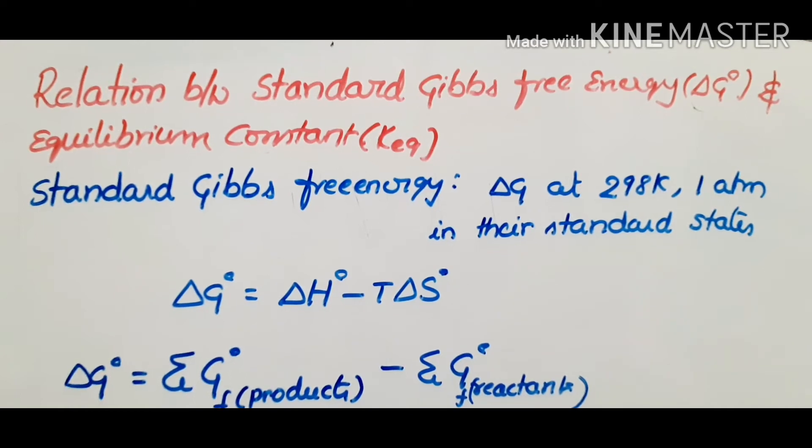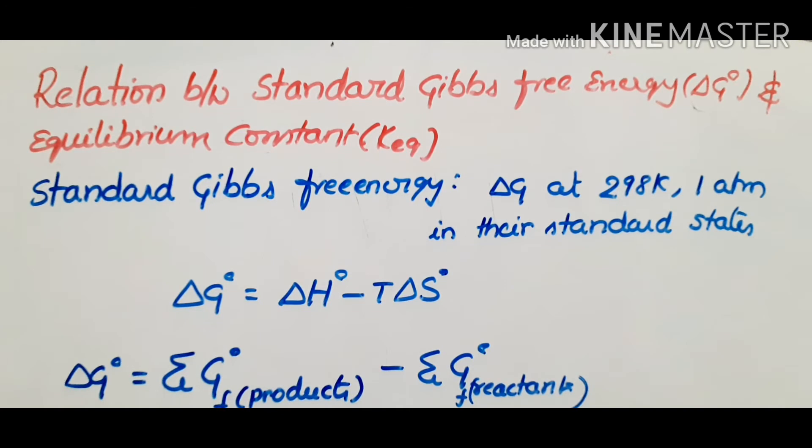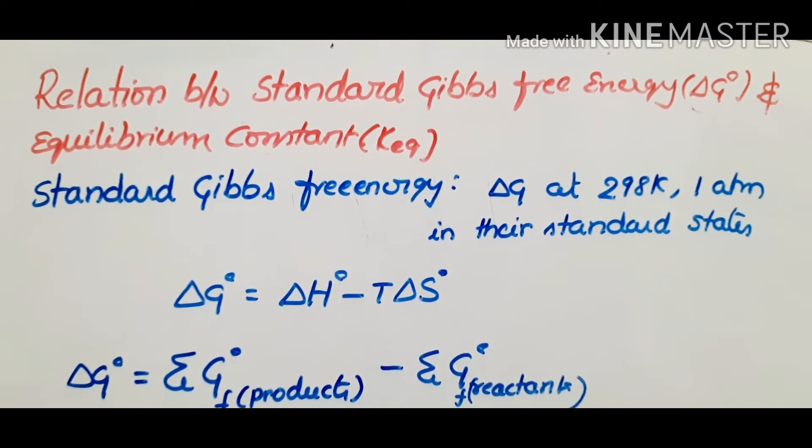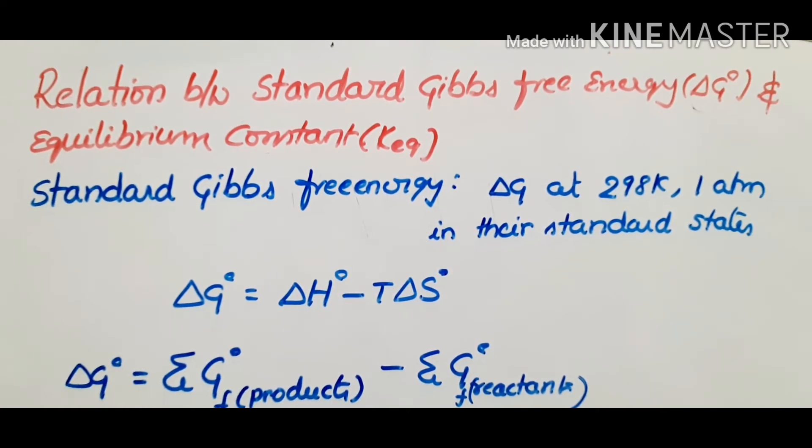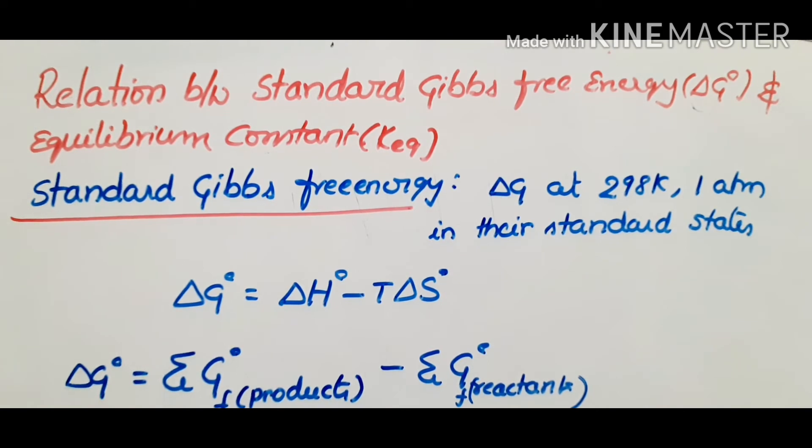Hi students, today's topic is relation between standard Gibbs free energy and equilibrium constant. We know what is equilibrium constant from the chapter chemical equilibrium. If anybody wants to know in detail, you can check my previous video, which is a part of chemical equilibrium. Right now, relation between standard Gibbs free energy and equilibrium constant. What is standard Gibbs free energy? Energy change of any substance or chemical reaction at 298K and 1 atmosphere in their standard states.